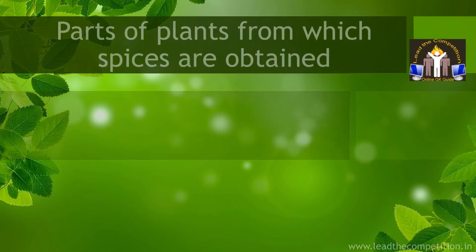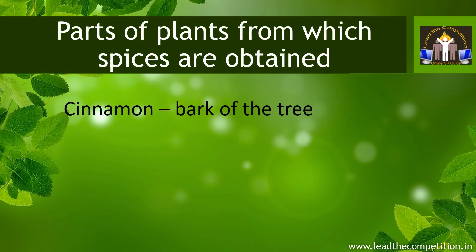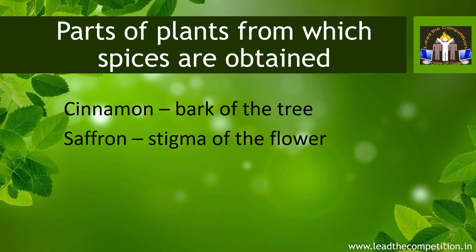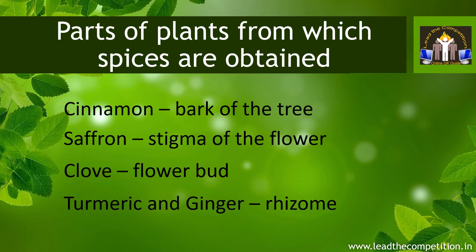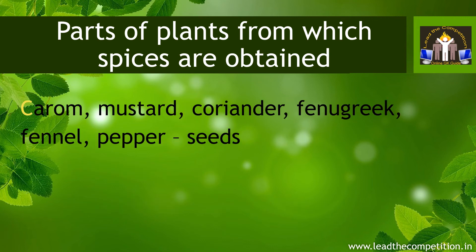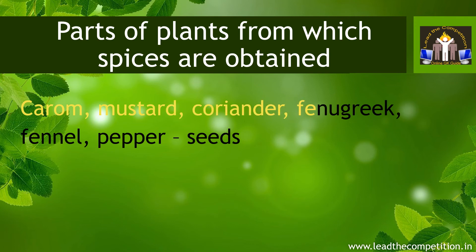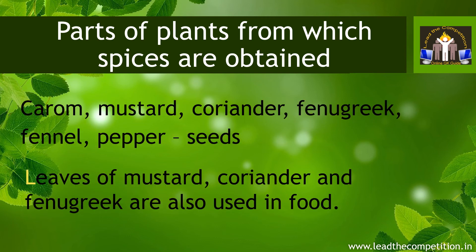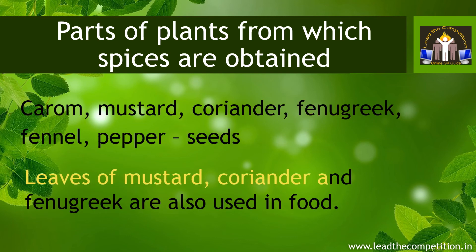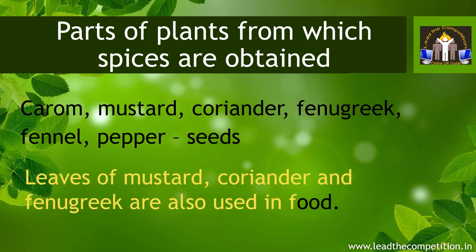The parts from which these spices are obtained: Cinnamon is obtained from the bark of the tree, while saffron is obtained from the stigma of the flower. Clove is the dried flower bud of its plant. Turmeric and ginger are rhizome or underground stem of the plant. Carom, mustard, coriander, fenugreek, fennel, and pepper are plants whose seeds are used as spices, while leaves of mustard, coriander, and fenugreek are also used in food.